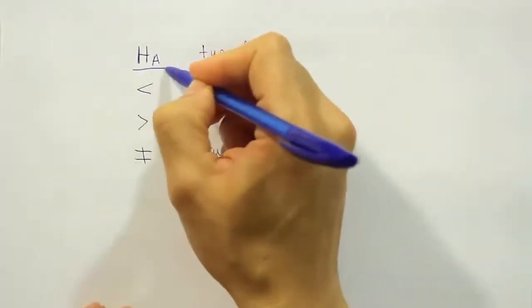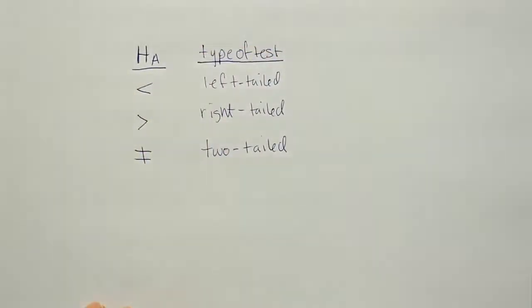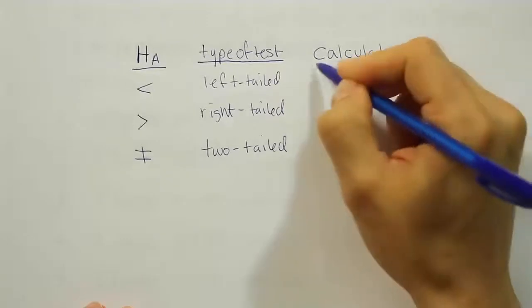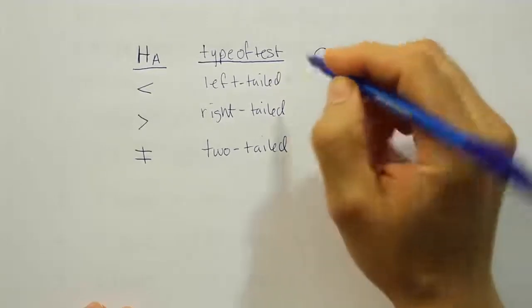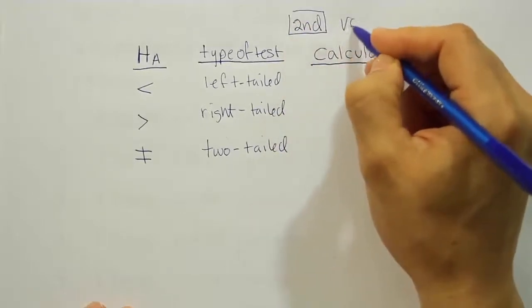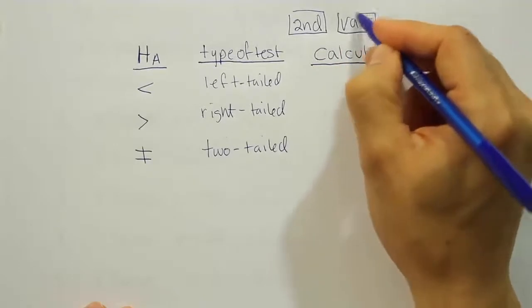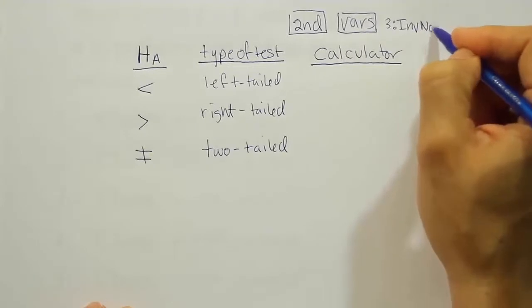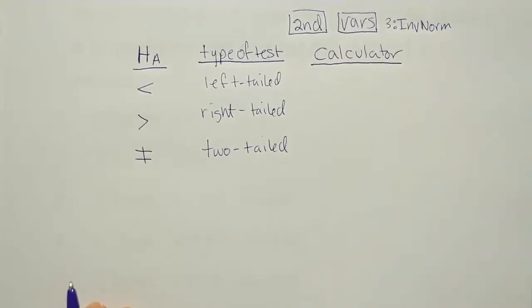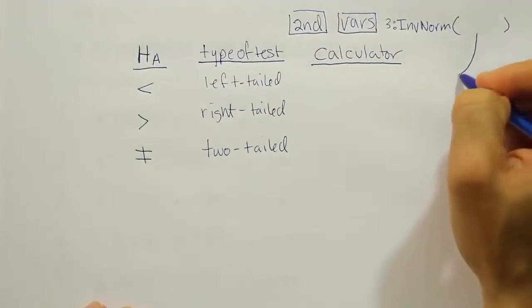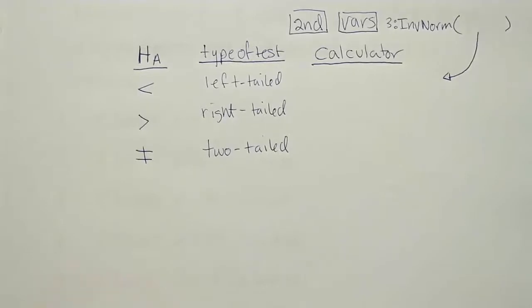So we have the type of test from HA. What we want to figure out next is what to enter in the calculator. For each of these problems, the calculator requires us to press second and then vars. We'll work in that second-vars option and select number three, which is the inverse norm. We need to figure out what argument goes in there for each of the three cases.